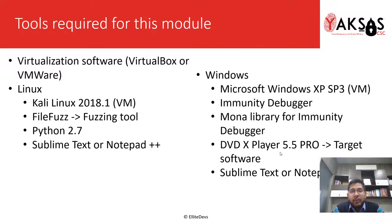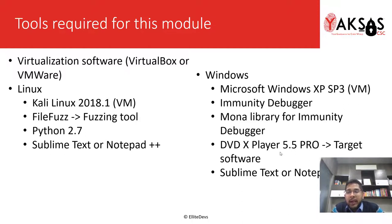These are the tools required for this module: virtualization software (either VirtualBox or VMware), a Kali Linux 2018.1 VM, and a file fuzzing tool — I will be using FileFuzz, download link in the description. I'll need Python 2.7 on both Windows and Linux, and a text editor — Sublime Text or Notepad++. The target machine is Windows XP SP3 as a VM, our debugger will be Immunity Debugger with the Mona library, and our target software will be DVD X Player 5.5 Pro. Download links for all software are in the description.